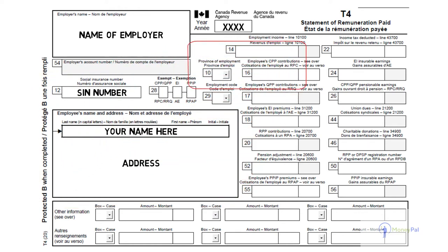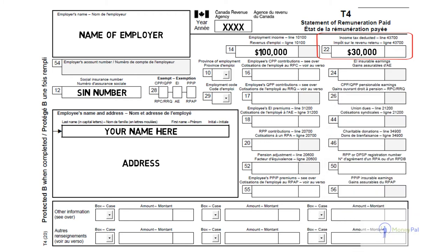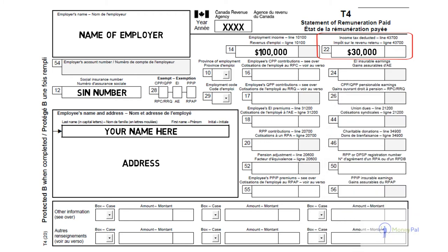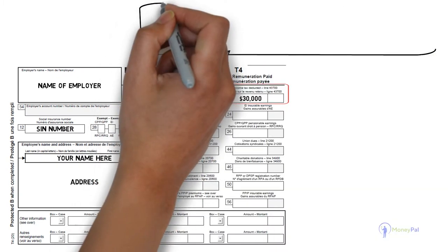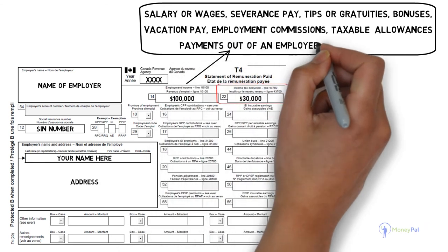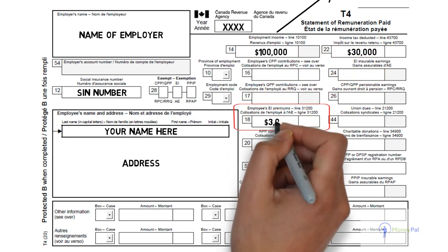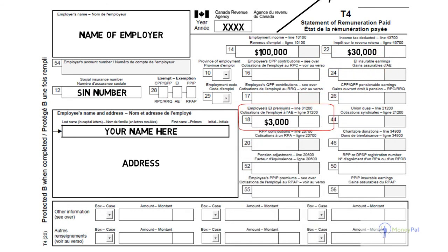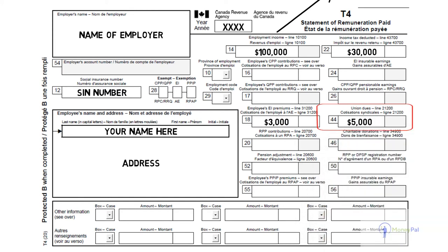Box 14 represents your employment income, and box 22 represents the total income tax that was deducted from your pay over the year. These numbers are just for understanding and not exact. This is some of the most common forms of remuneration that get added under box 14. Box 18 includes the total amount paid in employment insurance premiums, and box 26 represents your contributions to CPP during the year, which are deducted from your payroll based on your income.